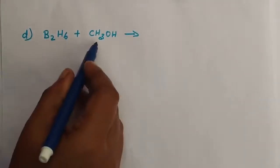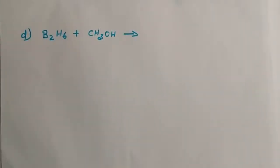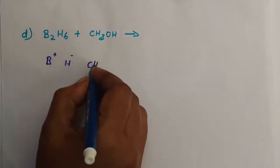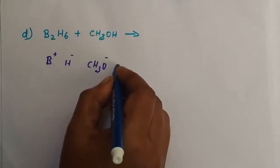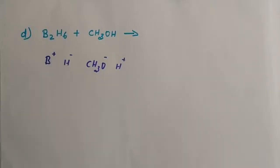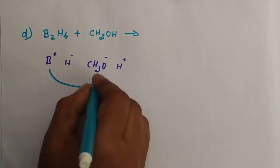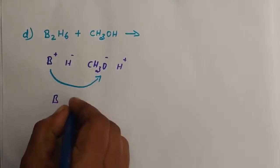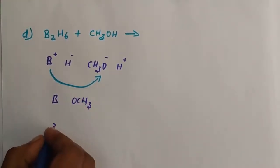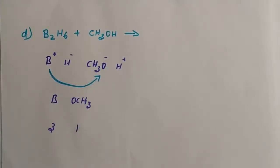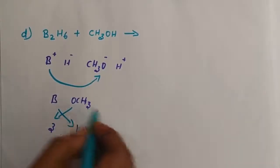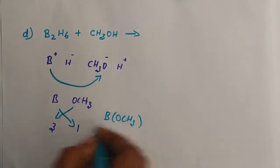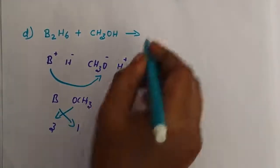Next question: diborane reacts with methanol. B2H6 reacts with CH3OH. Diborane splits into B plus, and methanol splits into CH3O minus. B plus and CH3O minus combine. Cross-multiplying with boron valence 3 and OCH3 valence 1 gives B(OCH3)3 as one product.